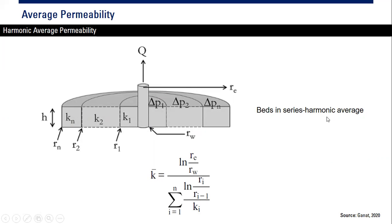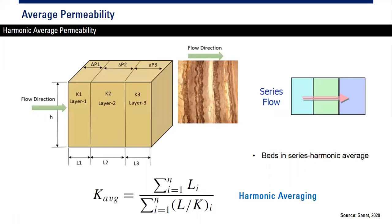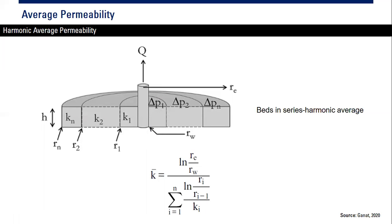Harmonic averaging also applies for radial flow — again beds in series. You have the flow rate, the drainage radius r_e, and radius 1, radius 2, radius 3 with the same thickness. You perform harmonic averaging using the corresponding formula with sigma (summation). You need to know and understand this because it may be asked in the test.